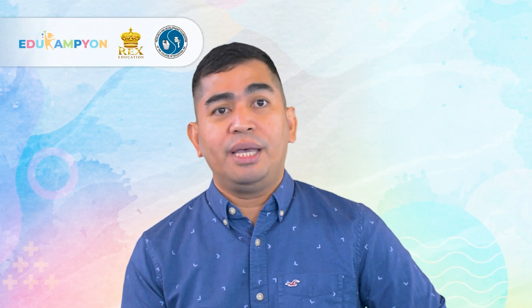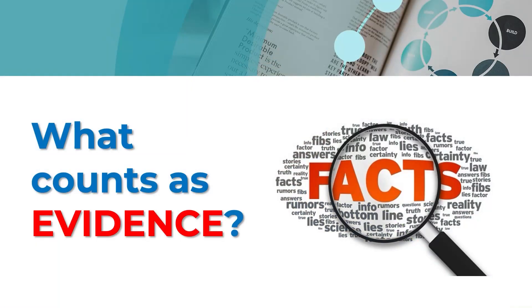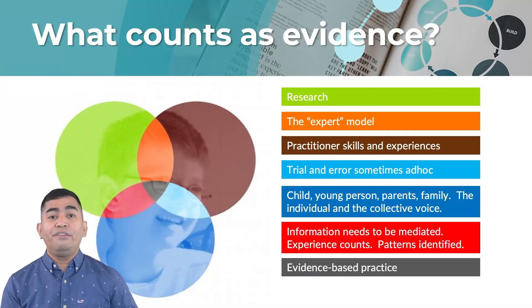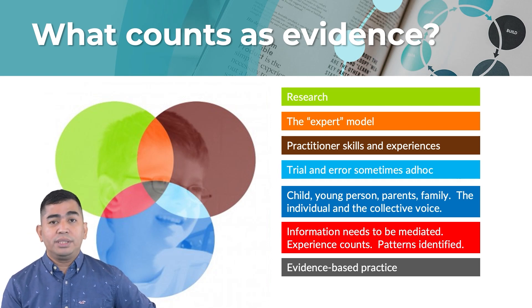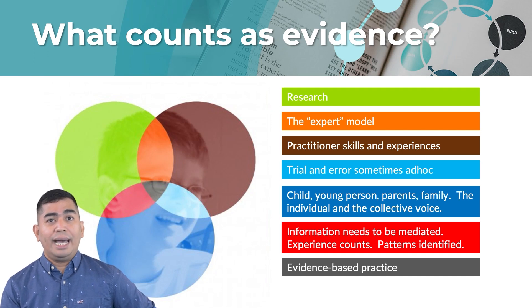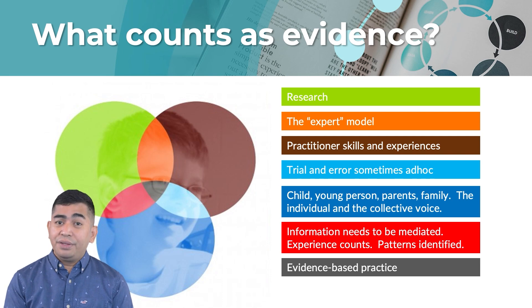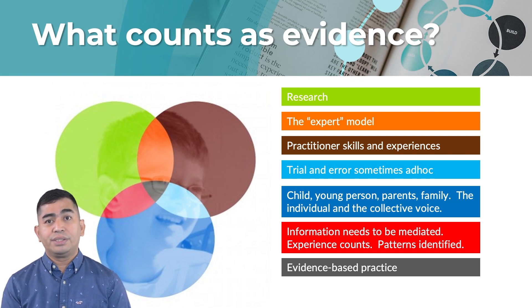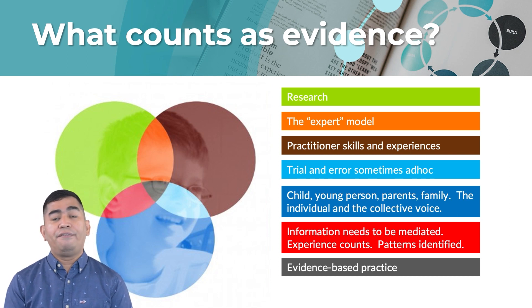Now let's go to the second concept, which is about best available evidence. The question to answer is: what counts as evidence? There is a fusion of evidence-based practice. You start with research, commonly known as research-informed practice. From there, you can combine it with expert models — theories you see in the literature. But more importantly, it's important to give value to your skills and experiences as a practitioner. Then you can also engage in trial-and-error results, looking at feedback from different stakeholders, and eventually look at the patterns you discover from all these observations, because this will yield evidence-based practice.